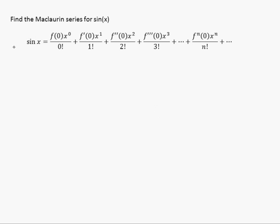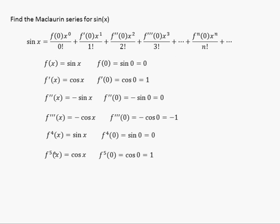Now let's do the same thing for sine x. We substitute sine x into the formula and look for f of zero, f prime of zero, f double prime of zero, f triple prime of zero, etc. We'll take all the derivatives up to the fifth for this example. The derivative of sine is cos, derivative of cos is negative sine, derivative of negative sine is negative cos, derivative of negative cos is positive sine, and derivative of positive sine is cos. Substituting x equals zero into each of those, the values go: zero, one, zero, negative one, zero, one, zero, negative one, etc.